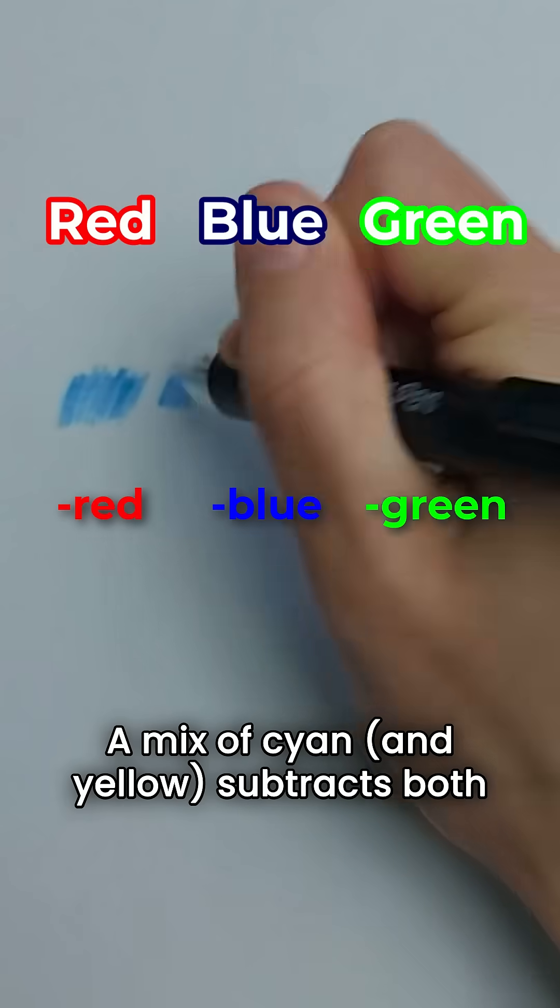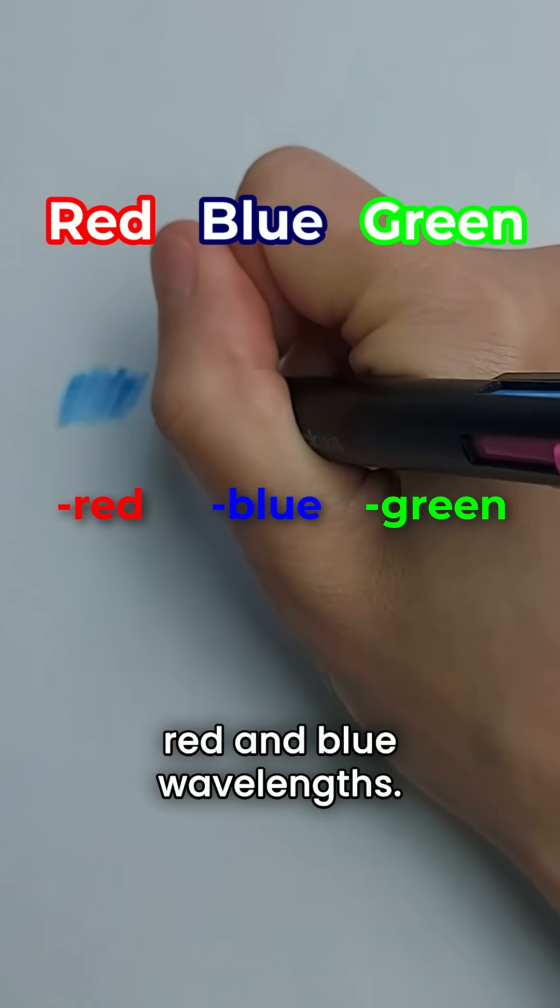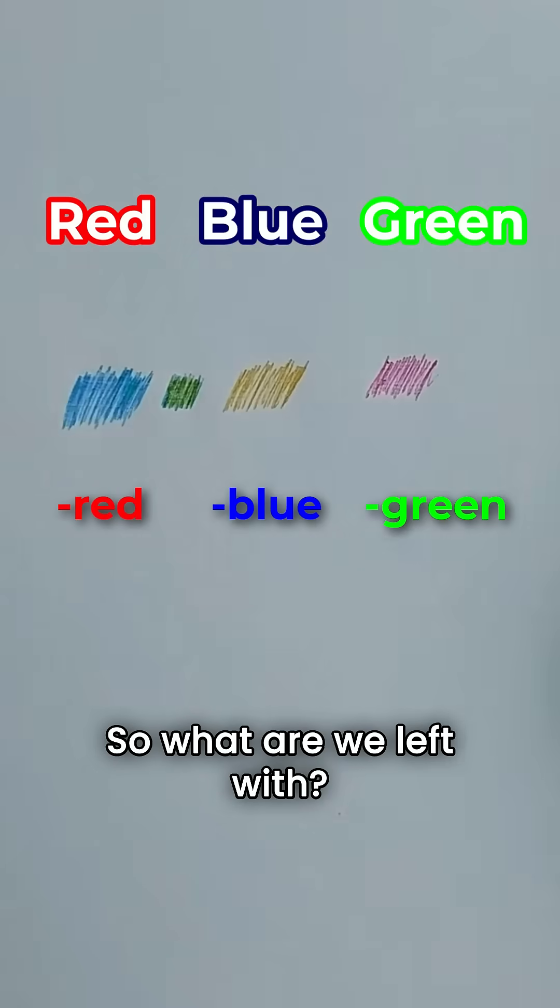We need to focus on what each pigment color subtracts. A mix of cyan and yellow subtracts both red and blue wavelengths, so what are we left with? Green.